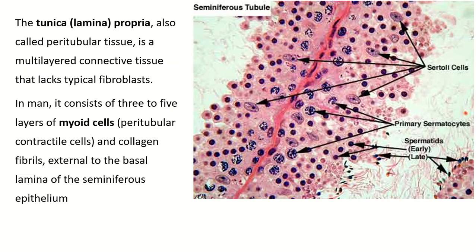This is the cross-section of the seminiferous tubule. This is one seminiferous tubule, and this is another seminiferous tubule. This pink layer is the tunica propria, or connective tissue layer, which is present outside the seminiferous tubule.